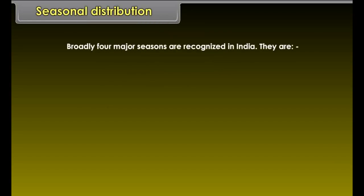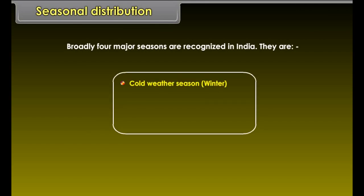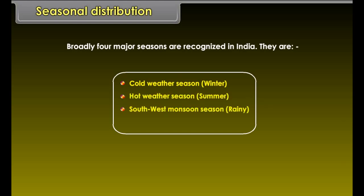Broadly, four major seasons are recognized in India: the cold weather season (winter), the hot weather season (summer), the southwest monsoon season (rainy), and the season of retreating monsoon.